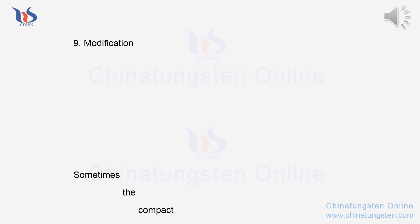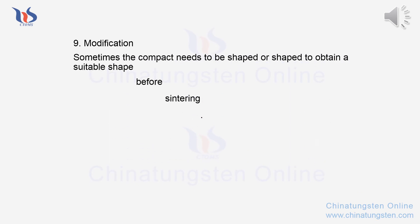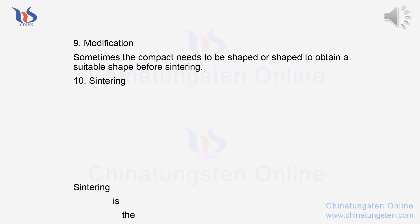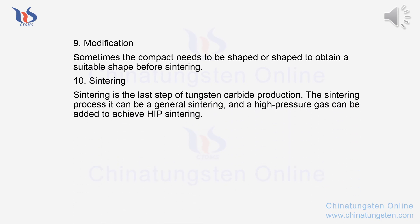Step 9 - Modification: Sometimes the compact needs to be shaped to obtain a suitable shape before sintering. Step 10 - Sintering: Sintering is the last step of tungsten carbide production. The sintering process can be a general sintering, or high pressure gas can be added to achieve HIP sintering.